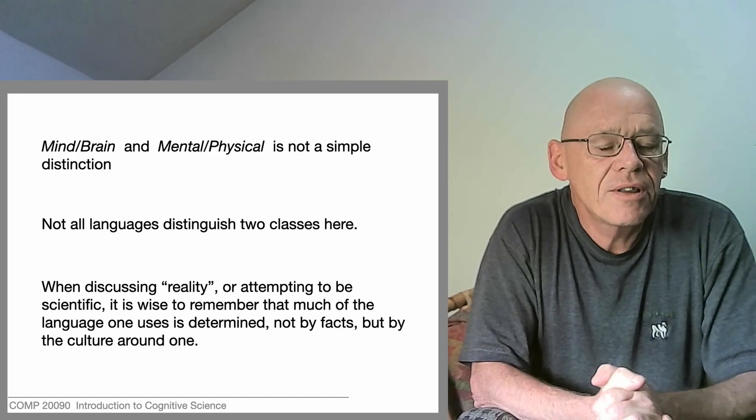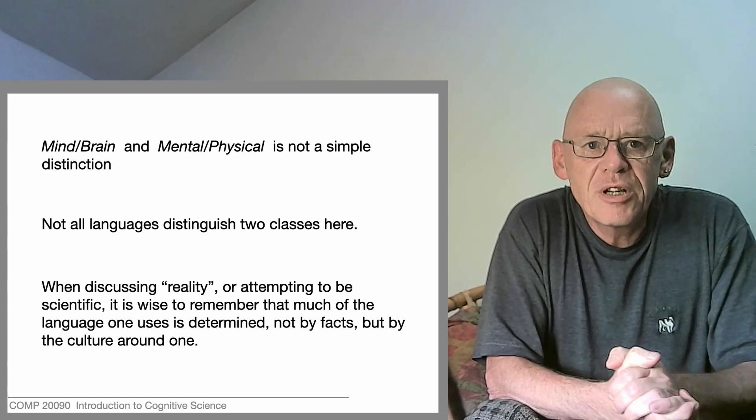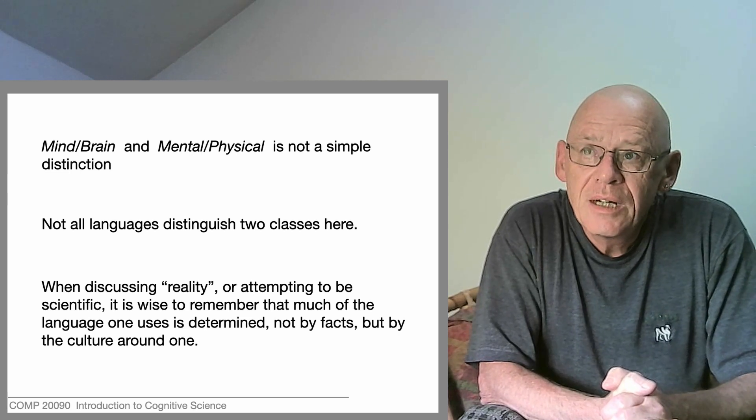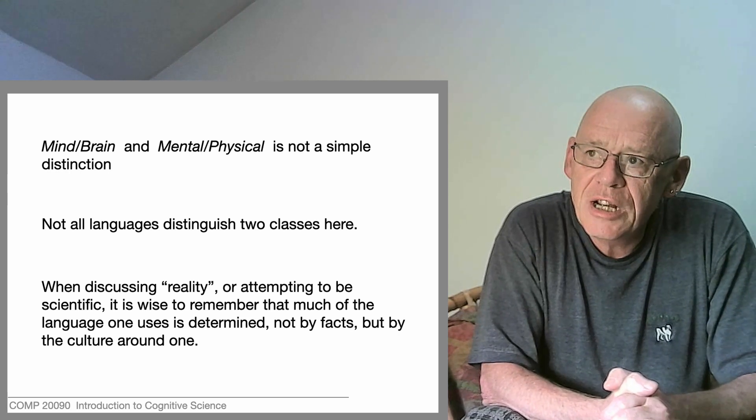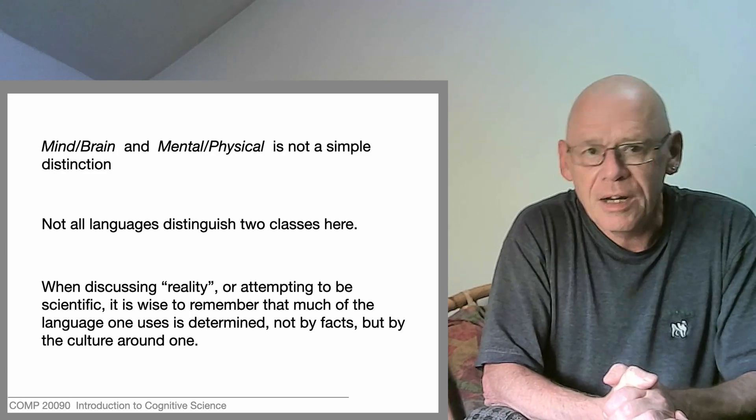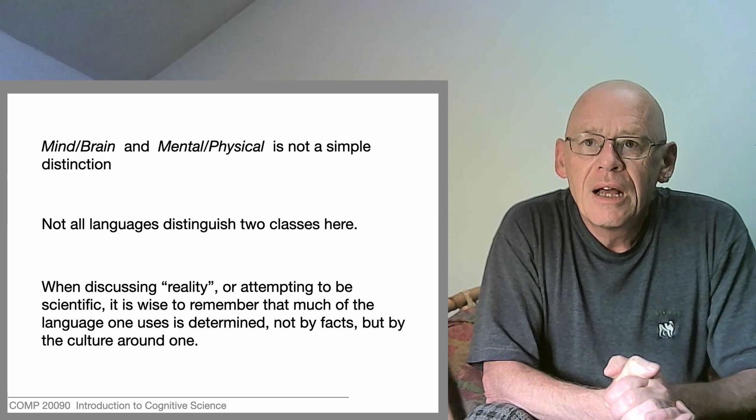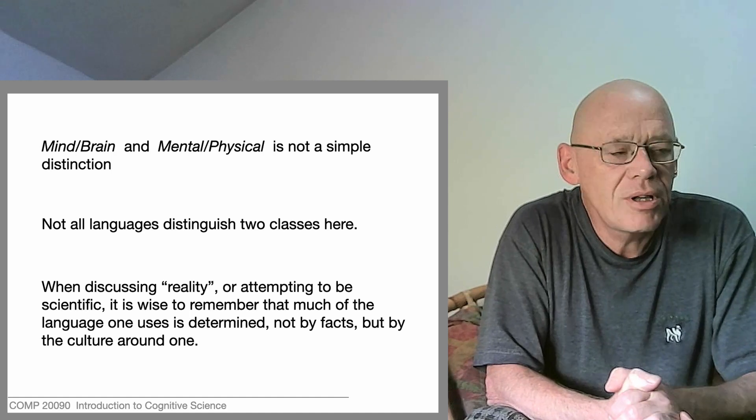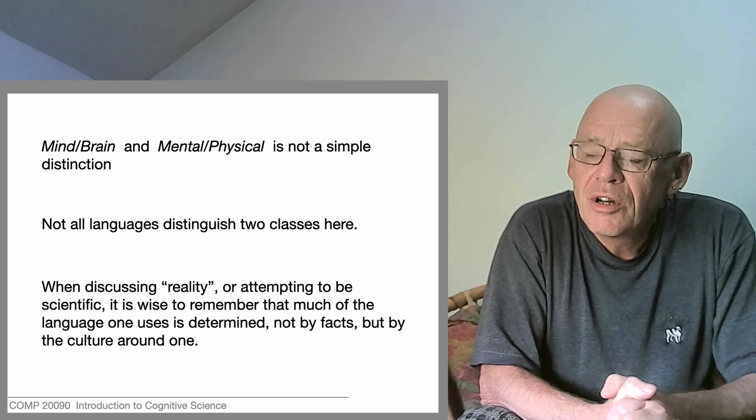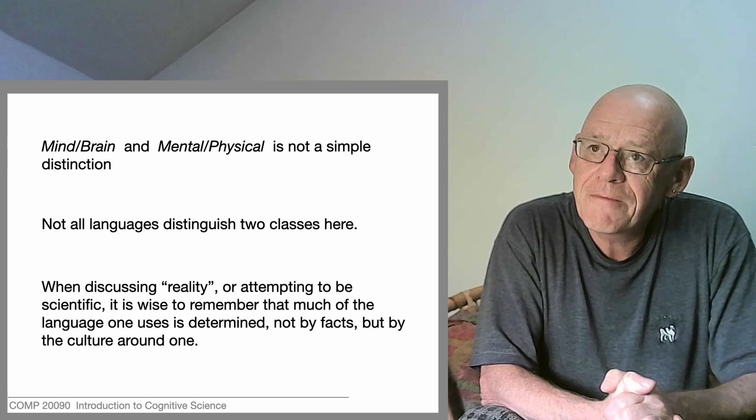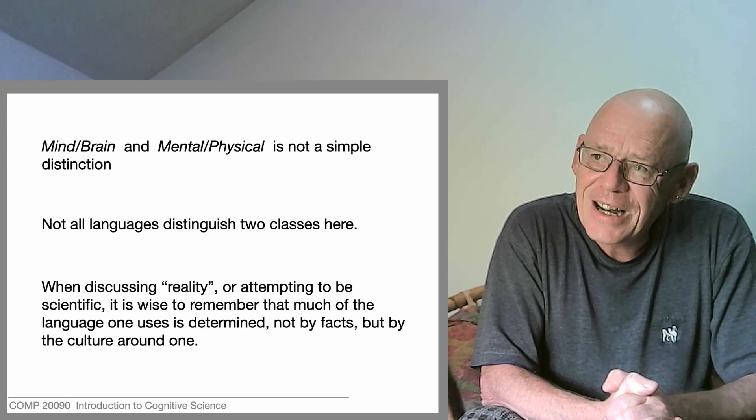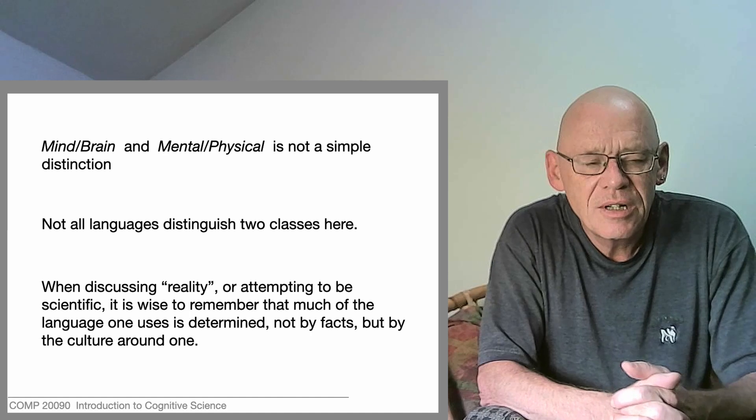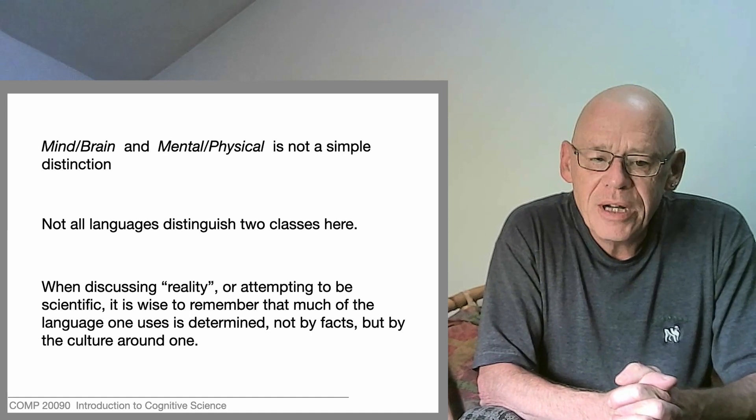While we're getting some language problems sorted out here at the start of the module, let's look at a familiar one: the difference between what we might call the mental and what we might call the physical. We'll frequently find a related opposition as we talk about the mind and the brain. You might think that's a fairly simple distinction - a tomato or table is a physical object and a thought or feeling is a mental object - but it's not that simple.